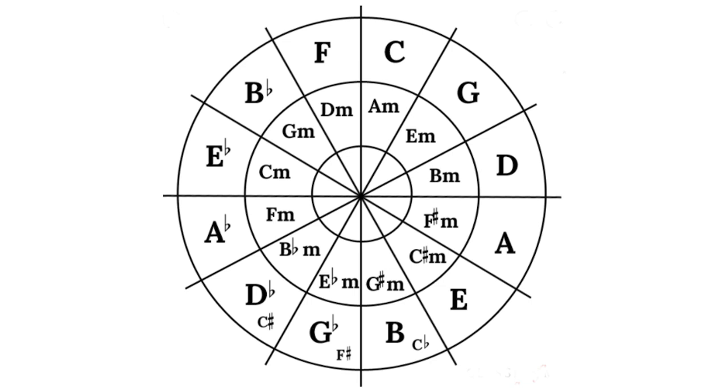The letters around the outer circle represent all the major keys. Now if you look in the inner circle you'll see all the minor keys. Minor keys are related to major keys and each minor key has a relative major key. This means that they share the same key signature and primary chords.